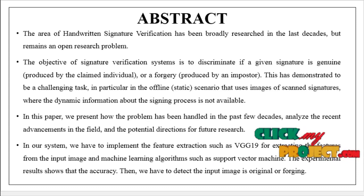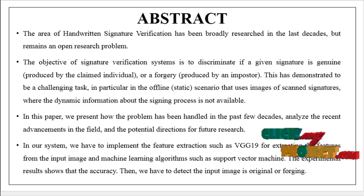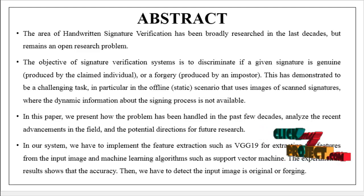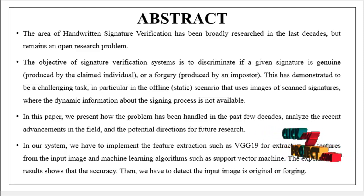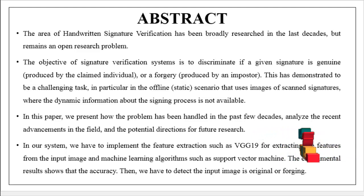We are going to see about the overview of our process. The main objective of our project is to detect or identify whether a given signature is genuine or forgery. The area of handwritten signature verification has been broadly researched in the last decades but remains an open research problem. This has demonstrated to be a challenging task, in particular in the offline scenario that uses images of scanned signatures, where the dynamic information about the signing process is not available.